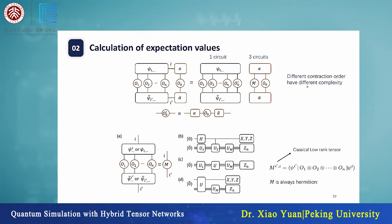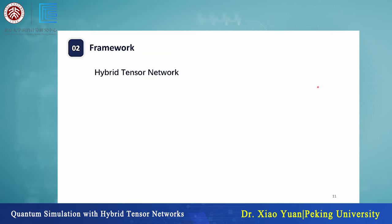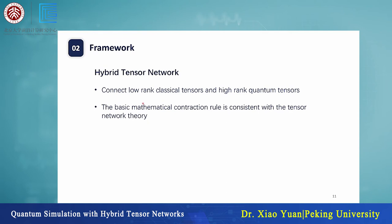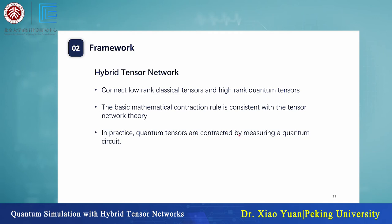To summarize: in our hybrid tensor network framework, the framework is defined by connecting low-rank classical tensors and high-rank quantum states. The mathematical contraction rule is the same as in conventional tensor network theory. But in practice we distinguish them because quantum tensors are contracted by measuring quantum states, while classical tensors are calculated mathematically. Next, we will give examples of how we can apply this framework to explain previous works and solve large problems using a small quantum computer.